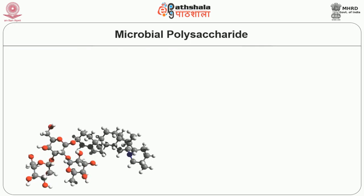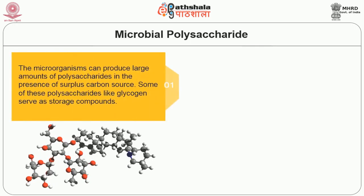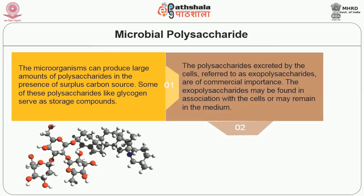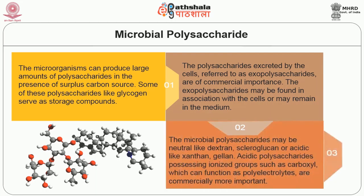The next topic is microbial polysaccharides. Microorganisms can produce large amounts of polysaccharide in the presence of a surplus carbon source. Some of these polysaccharides, like glycogen, serve as storage compounds. The polysaccharides excreted by the cells, referred to as exopolysaccharides, are of commercial importance. The microbial polysaccharides may be neutral, like dextran or scleroglucan, or acidic, like xanthan and gellan. Acidic polysaccharides possessing ionized groups such as carboxyl, which can function as polyelectrolytes, are commercially more important.